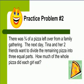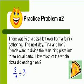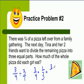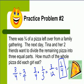Practice problem two: There was three-fourths of a pizza left over from a family gathering. The next day, Tina and her two friends wanted to divide the remaining pizza into three equal parts. How much of the whole pizza did each girl eat? We start out with three-fourths and divide by three — putting three over one, so three-fourths stays the same, then we multiply by the reciprocal, one over three. Three times one is three, four times three is twelve, and we simplify three-twelfths to one-fourth. Each girl ate one-fourth of the remaining pizza. Hopefully this has helped you understand how to divide fractions. If you have any questions, make sure you contact your teacher.